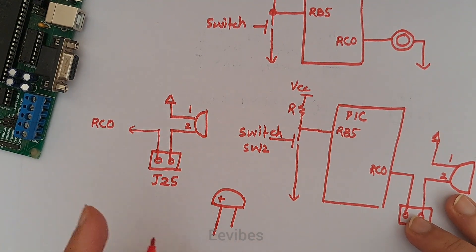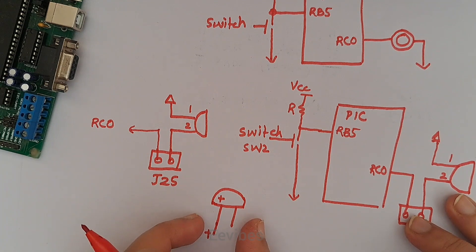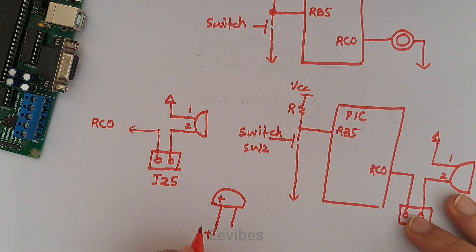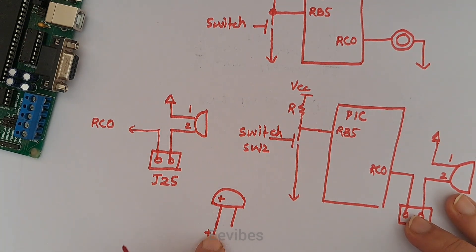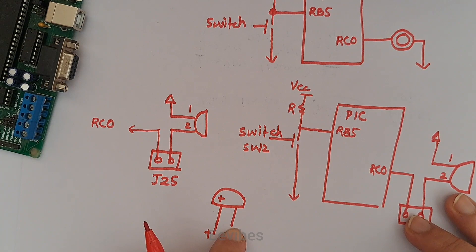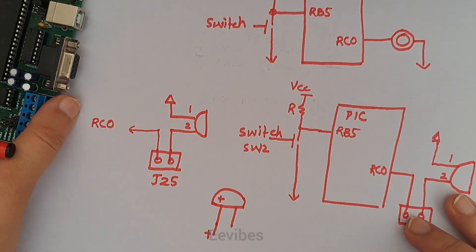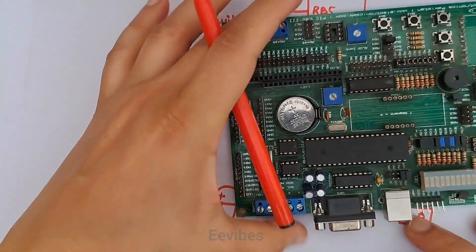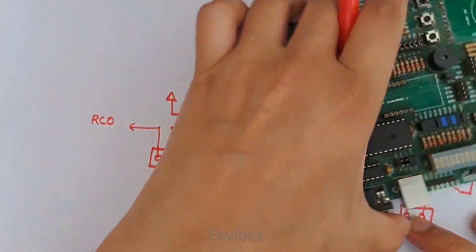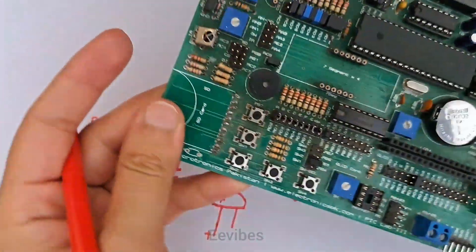In this way you identify the terminals of the buzzer. At the positive terminal you need to connect the supply voltage of plus 5 volts while the negative terminal is usually grounded. On this development board, let me describe it more clearly - you can see different switches are connected.